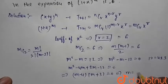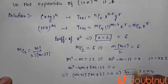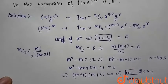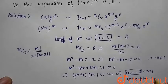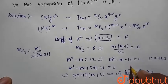From here m can be minus 3 or 4, but m cannot be negative. So we cancel out minus 3.